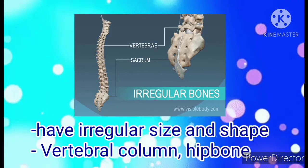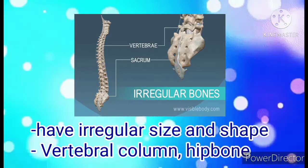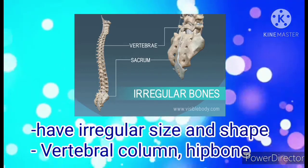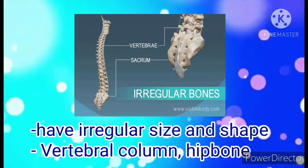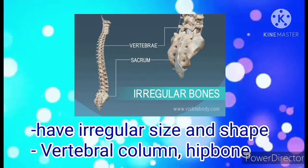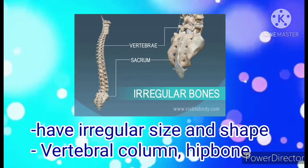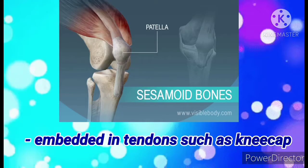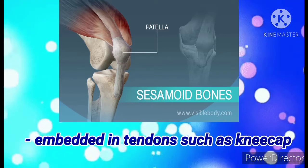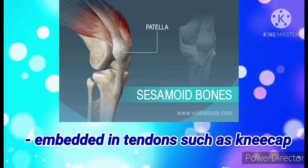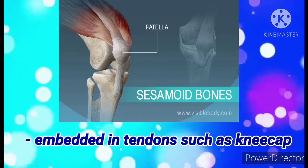Next, we have the irregular bones, which have irregular size and shape. These include the bones of the vertebral column, the hip bone, and even the base of the skull. The last type of bone is the sesamoid bones, which are embedded within tendons, such as the bone of our knee or kneecap.